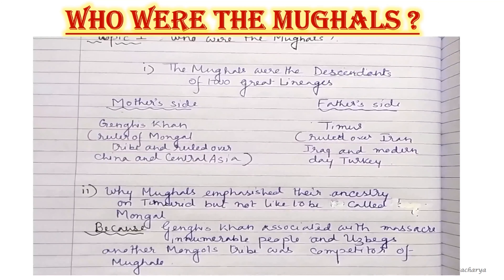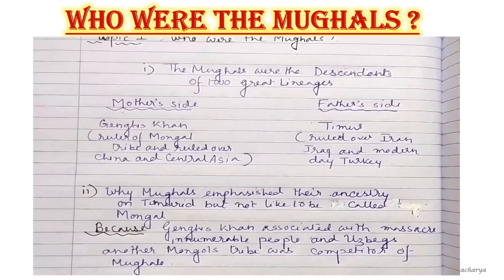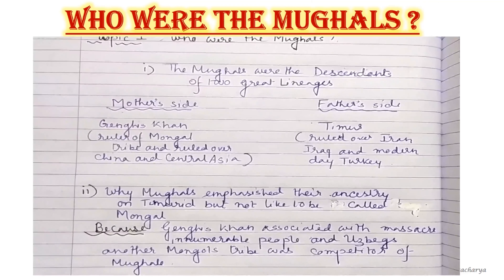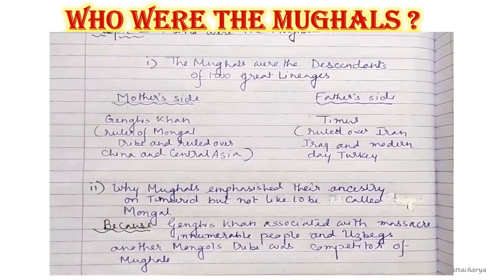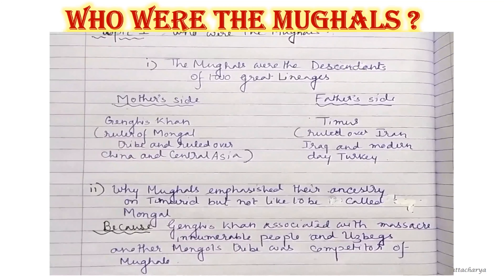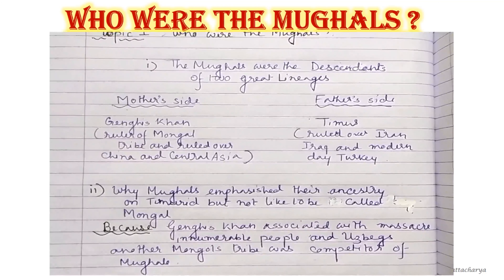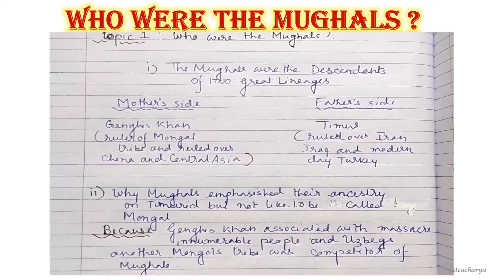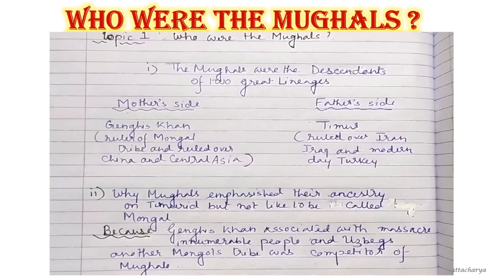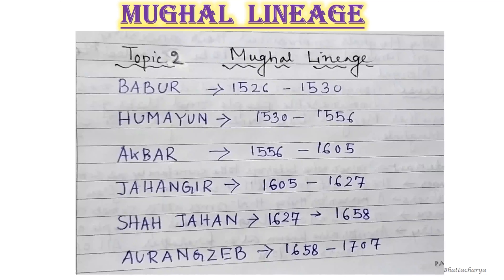The Mughals emphasized their Timurid ancestry and did not like to be called Mongols because Chengiz Khan was associated with the massacre of innumerable people, and the Uzbeks, another Mongol tribe, were competitors of the Mughals. Massacre means the killing of a large number of people. That is why the Mughals preferred their Timurid background on the father's side.